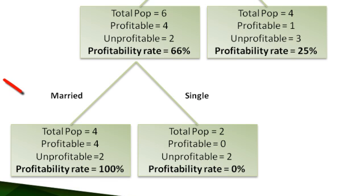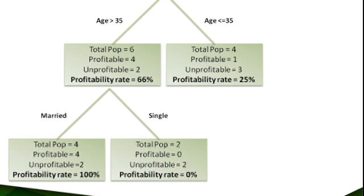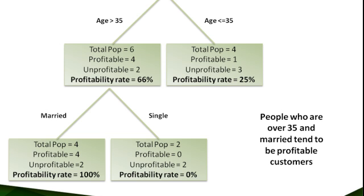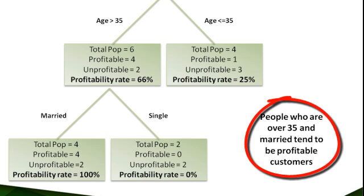Notice the left-hand box now. It has four customers, all of whom are profitable. This segment of population, that is, people who are over 35 and married, has a profitability rate of 100%. We have now identified a small segment of population that is highly profitable for the credit card company. We have also learned that the credit card company needs to focus its marketing efforts on people who are above 35 and married, as these people are likely to be profitable customers.